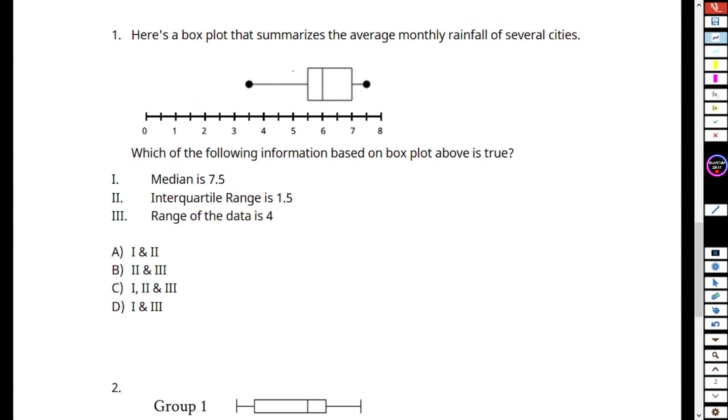Here is a box plot that summarizes the average monthly rainfall of several cities. Which of the following information based on the box plot above is true? We can see here this point is our maximum value of data, that is 7.5, and this is our minimum data, that is 3.5. The second quartile or median, this line, is 6, so our median is 6.